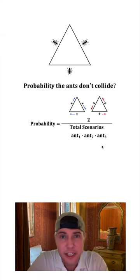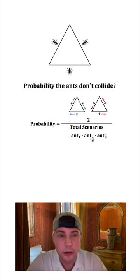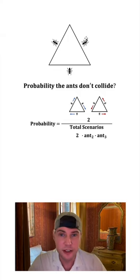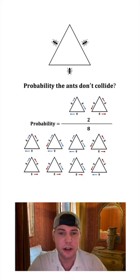Each ant is going to behave independently. So in order to get the total number of scenarios, we can just multiply how many scenarios for each ant. So the first ant has two scenarios, the second ant has two scenarios, and the third ant has two scenarios. And two times two times two is equal to eight. And if you want to see all eight scenarios, here they are right here.